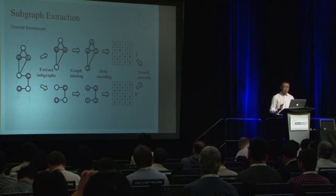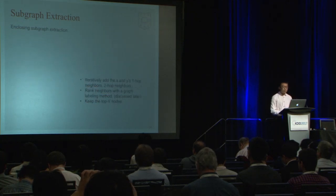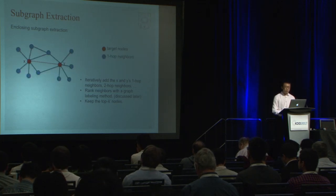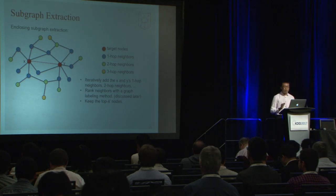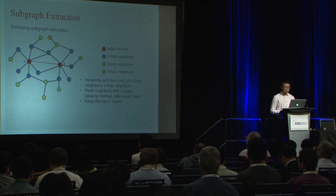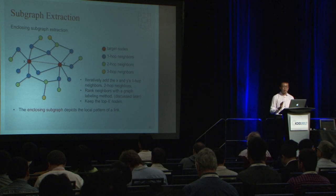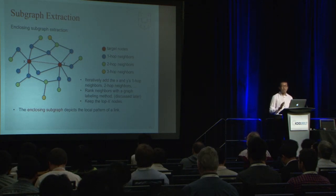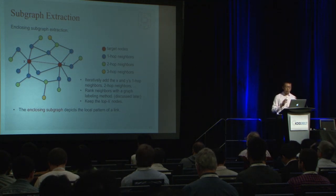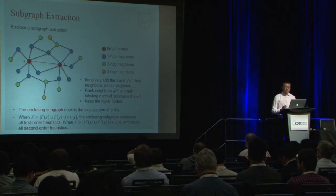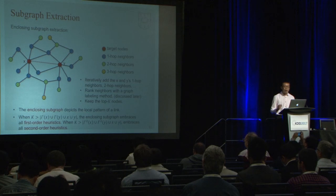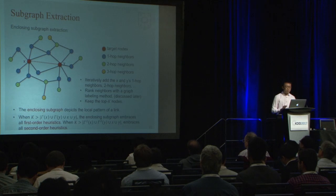Given target nodes x and y, WLNM extracts subgraphs by iteratively adding one-hop, two-hop, three-hop neighbors and so on, until the subgraph has more than k nodes. The neighboring nodes are ranked using a graph labeling method, and the top k nodes are kept to form the enclosing subgraph for the target link. The enclosing subgraph depicts the local pattern of a link and may contain rich information about whether the link is likely to exist. Moreover, as k increases, the enclosing subgraph gradually embraces all information needed to calculate first-order, second-order, and high-order heuristics.